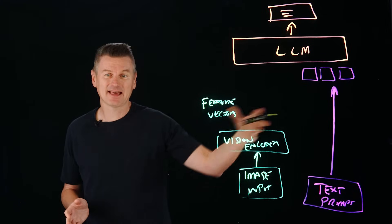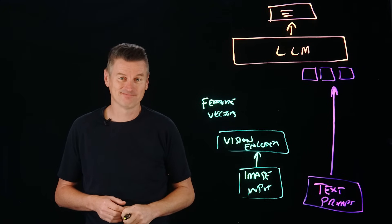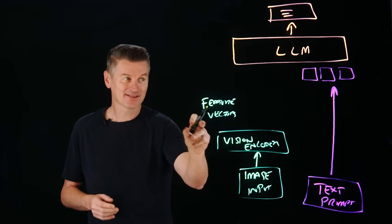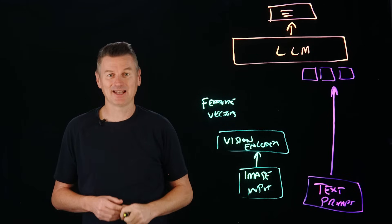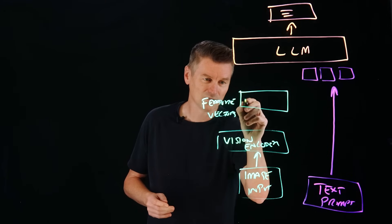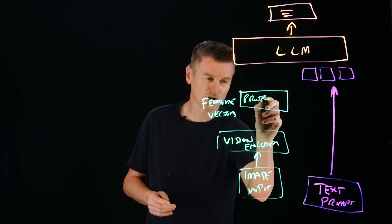So our images are now vectors, but these vectors can't be fed into a large language model directly either. That's why we need an additional stage, which is a projector.